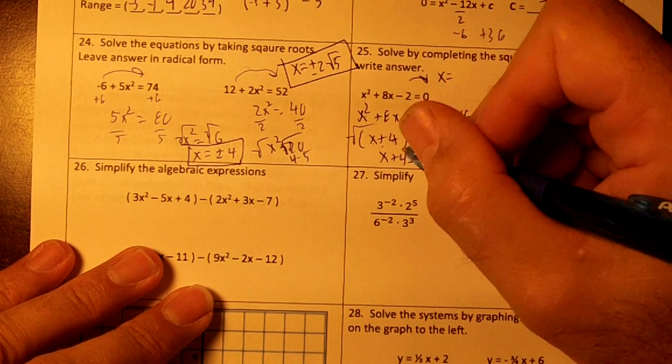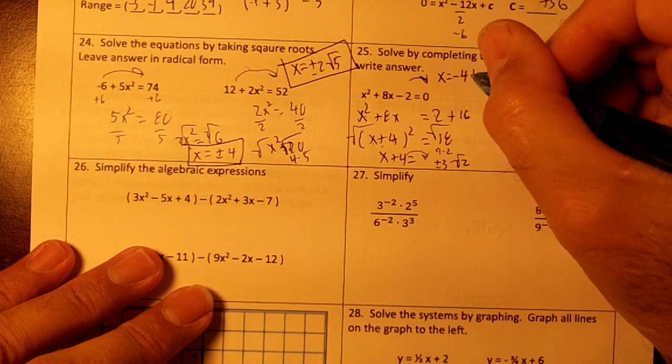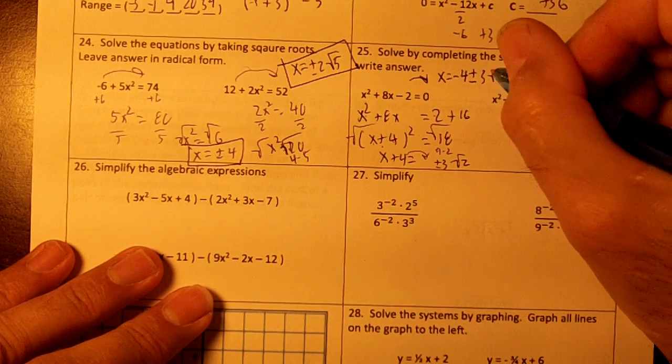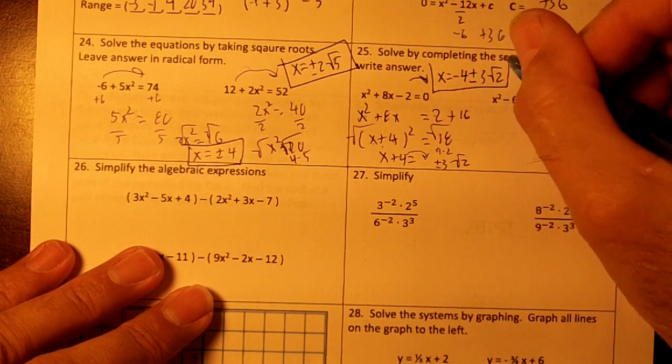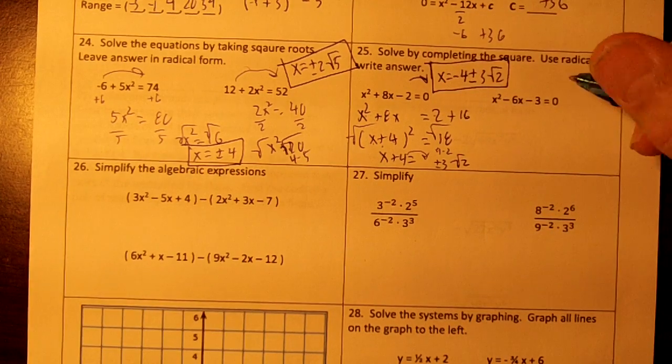You'll get x. The opposite of plus 4 is negative 4, so x equals negative 4 plus or minus 3√2. That was awesome.